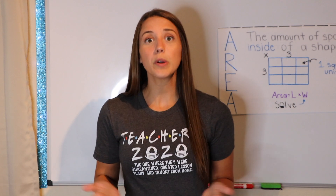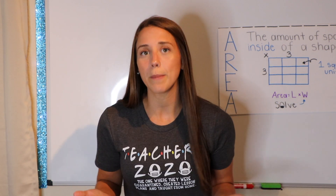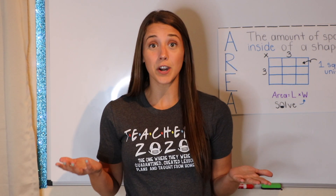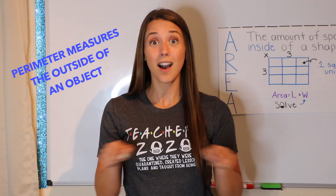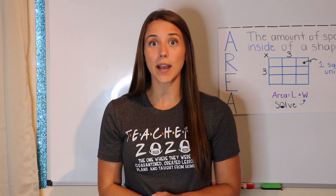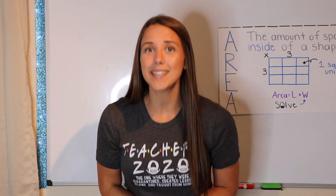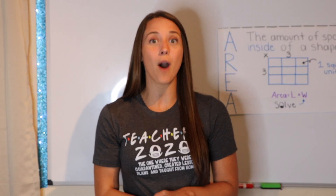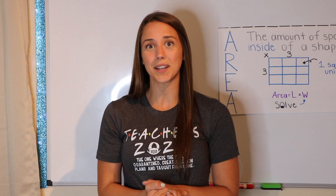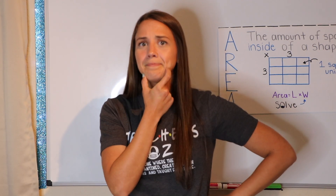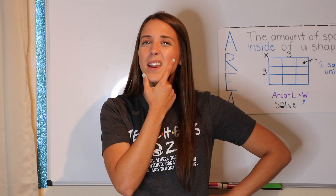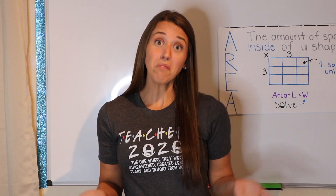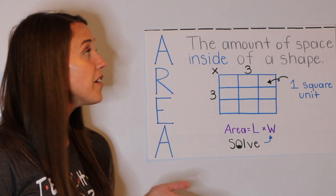So last episode, we were learning about perimeter. As we know, perimeter is the outside of an object. So today, we are going to be learning about the area of an object. What is area? Well, let's take a look to learn about area.